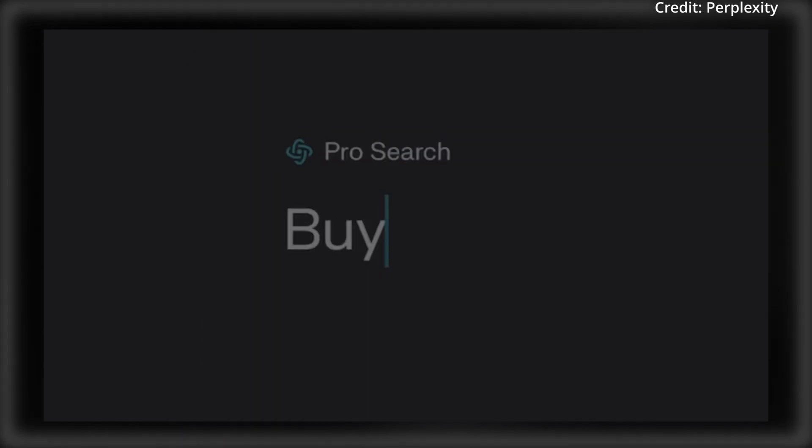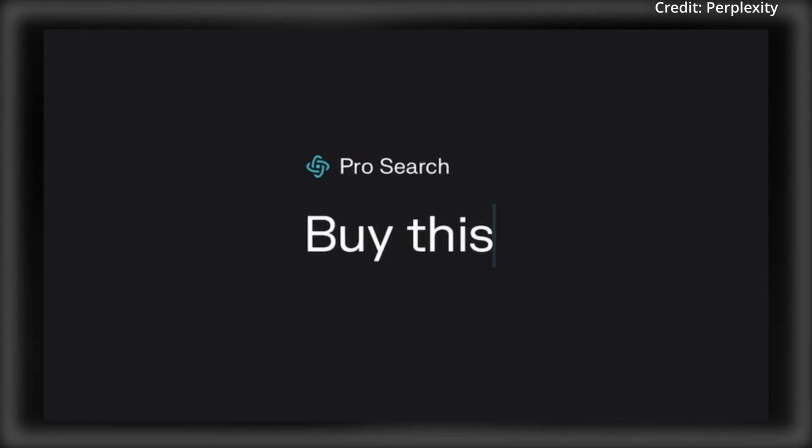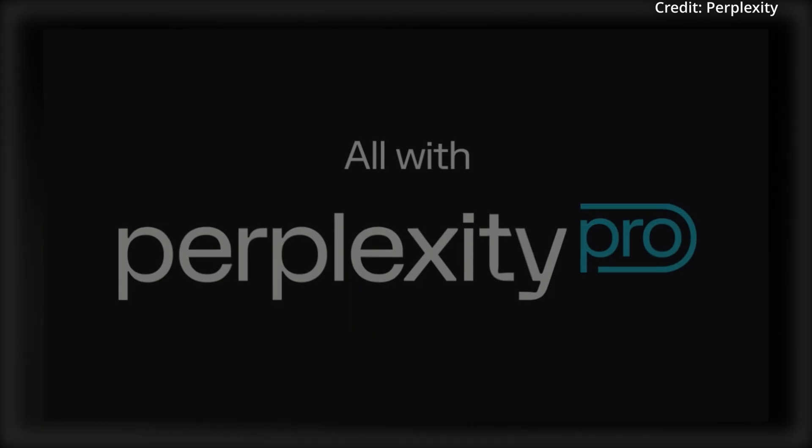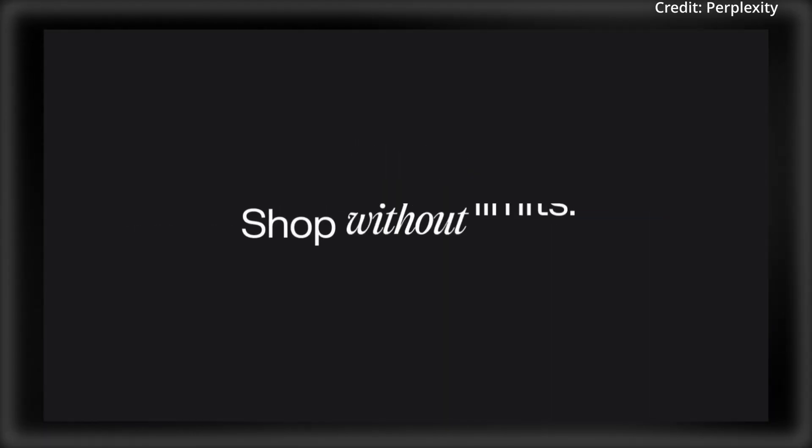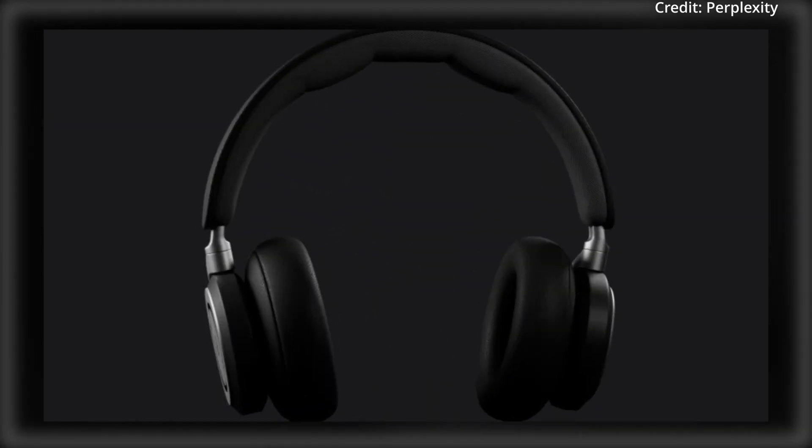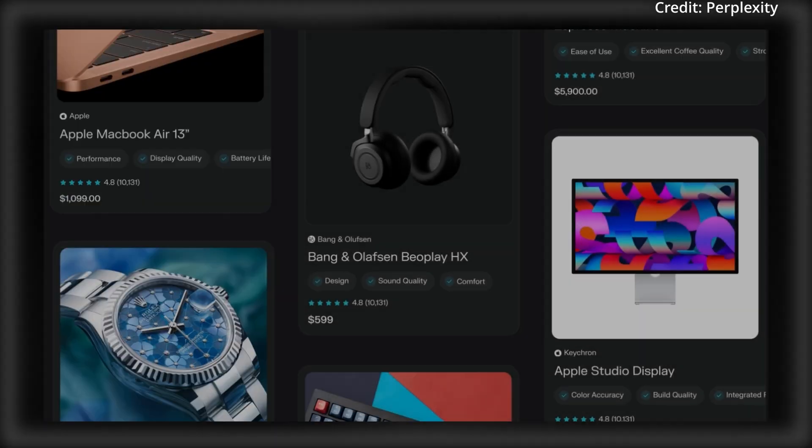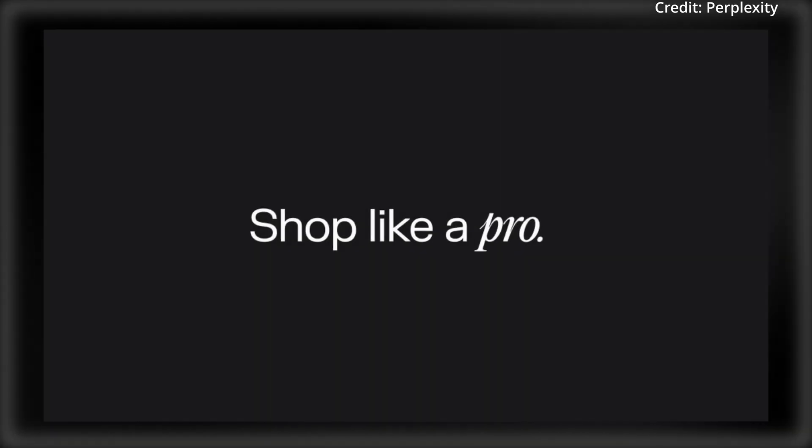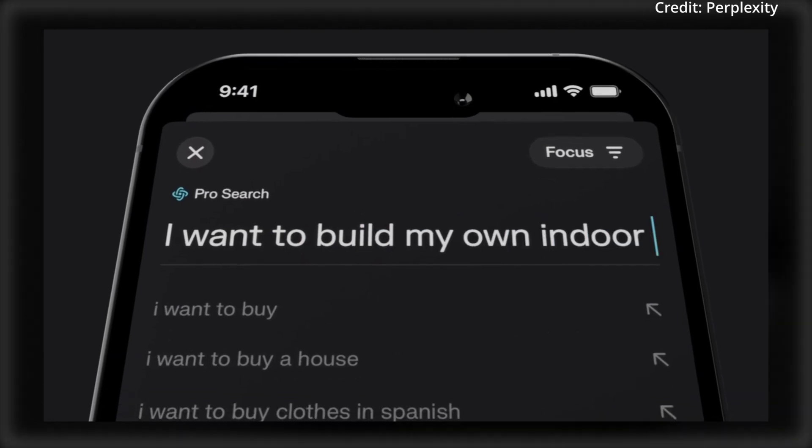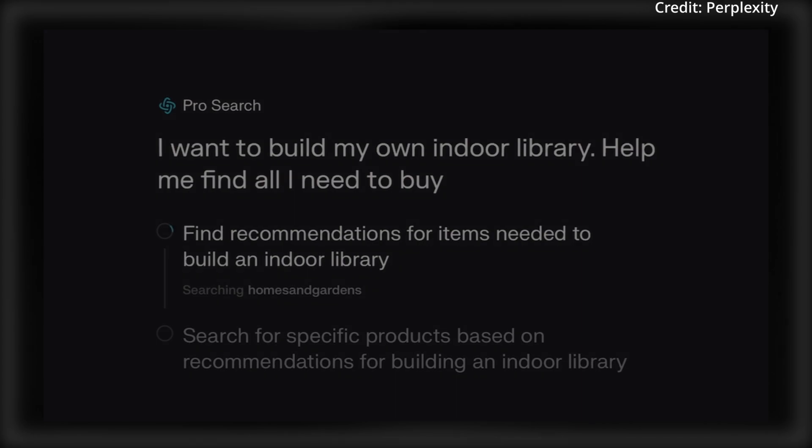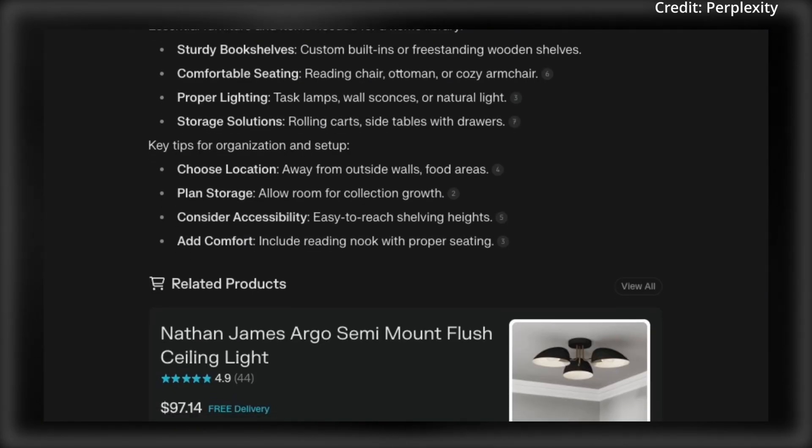On top of this, Perplexity also just released a new feature called Snap to Shop, allowing users to upload photos of items to find similar products, even without knowing their names. Importantly, the company emphasizes that its product recommendations aren't sponsored to ensure unbiased results. And for merchants, a dedicated program enables direct integration of product data, increasing visibility in search results, and supporting one-click checkout. Sellers also gain free access to Perplexity's analytics, providing insights into shopping trends.